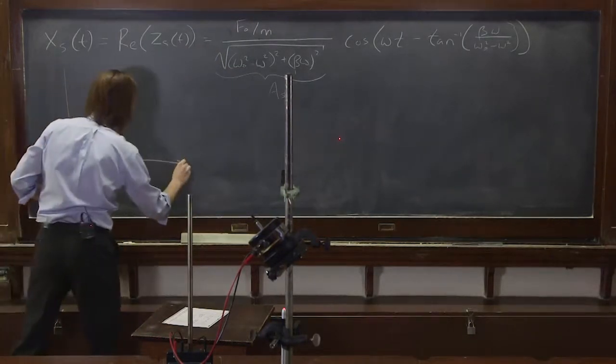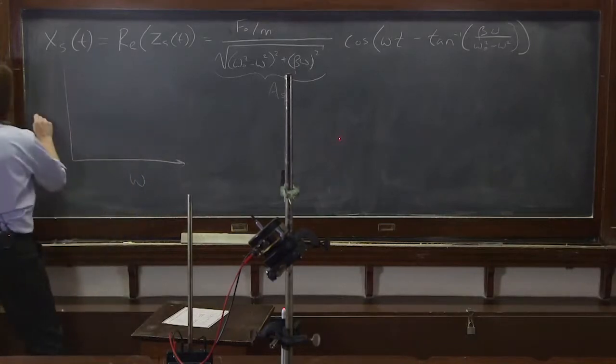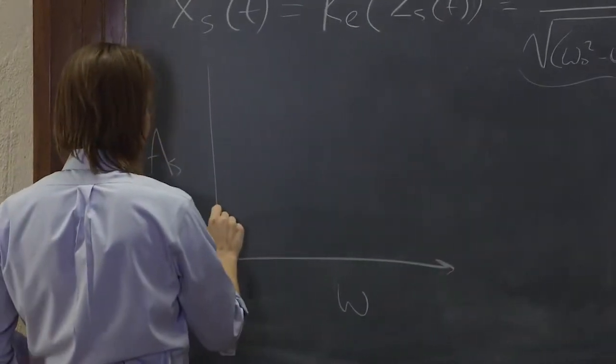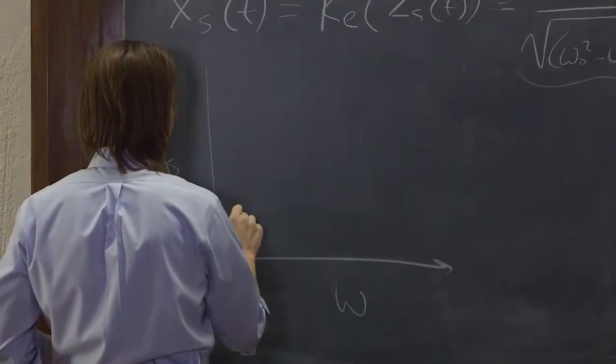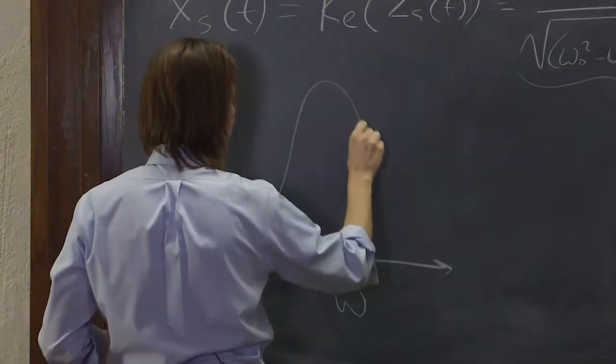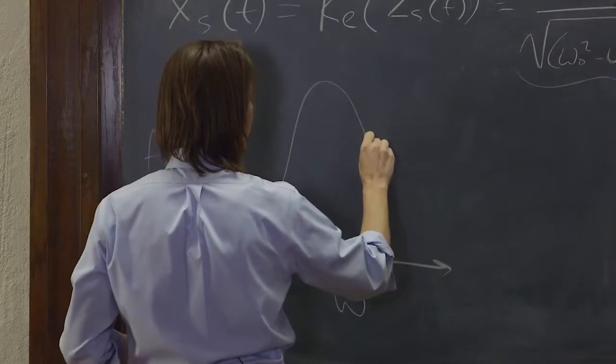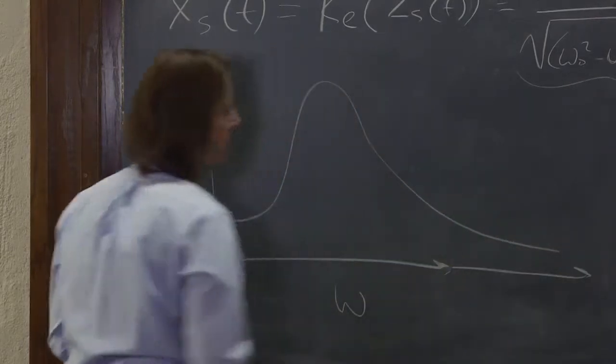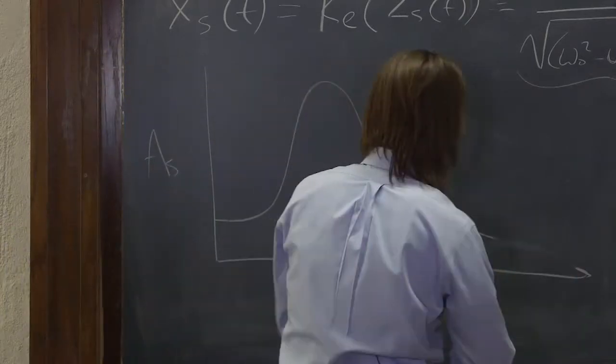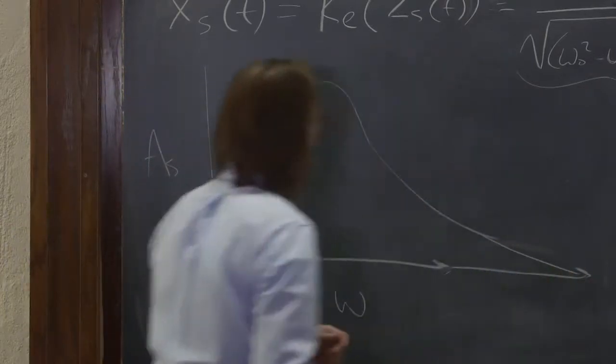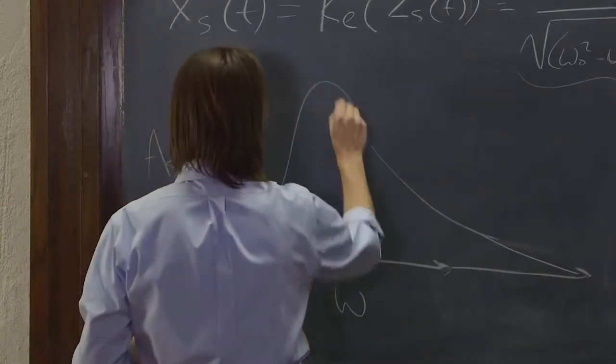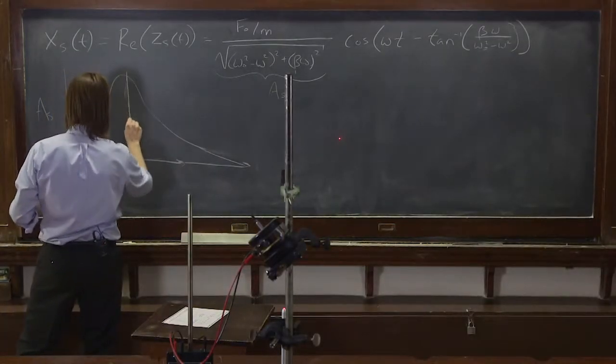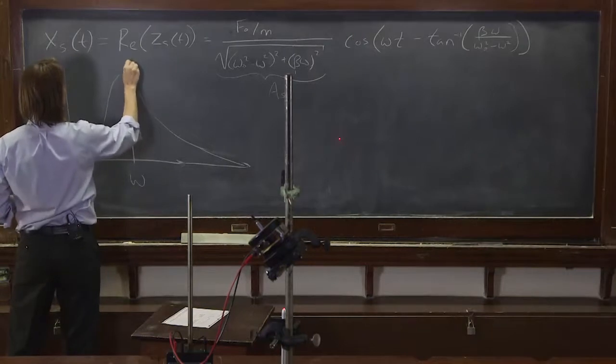So if we were to plot it, it looks something like this. If you plot omega on this axis, steady state amplitude on this axis, you actually get kind of a finite amplitude down here at low frequency. And then you get a peak near omega naught. And then it tends to zero at higher frequencies.